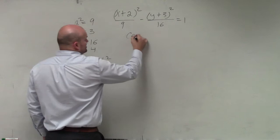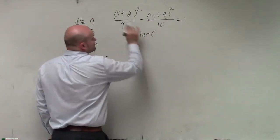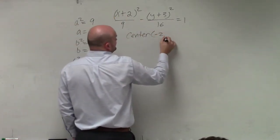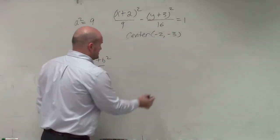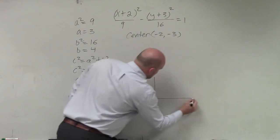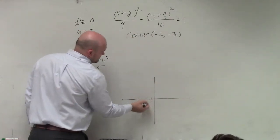I know my center is, remember, h is always with x, y is always with k. So negative 2, negative 3. Now I have enough information to plot this. So my center is at negative 2, negative 3.